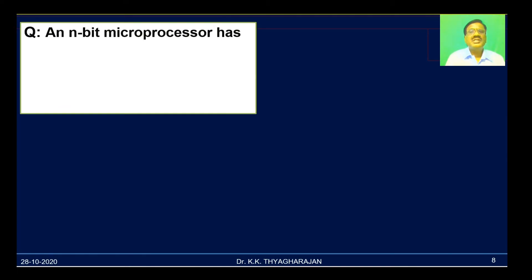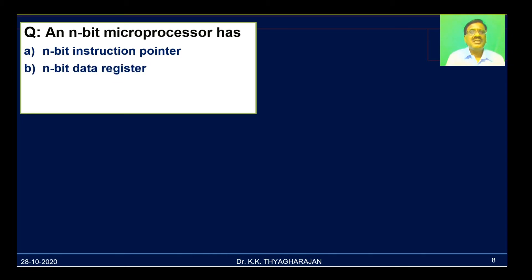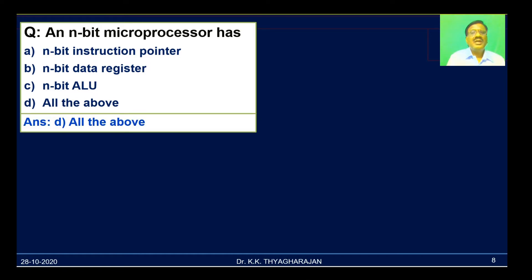The first question is: an n-bit microprocessor has — A, an n-bit instruction pointer (program counter); B, an n-bit data register; C, an n-bit ALU; D, all the above. For example, in MIPS architecture, which is a 32-bit microprocessor, the instruction pointer size is 32-bit, the ALU size is 32-bit, and the register size is also 32-bit. So if all these are 32 bits, the microprocessor is a 32-bit processor. The answer is D, all the above.